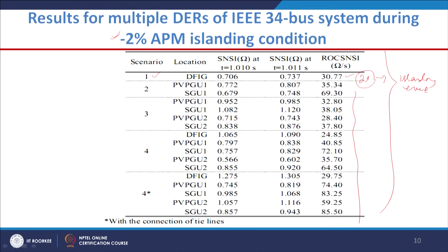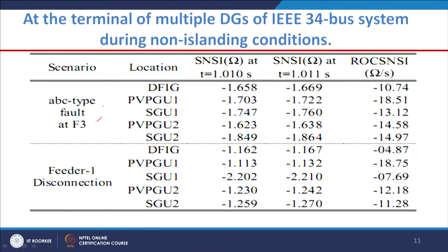These results were obtained for −2% active power mismatch (APM). We also tested non-islanding events on the IEEE 34-bus system, including an ABC-type fault at location F3 and feeder disconnection, considering different DG types: DFIG (wind system), PV system, and synchronous-based DG. Different types of renewable sources were included to test the technique's robustness.